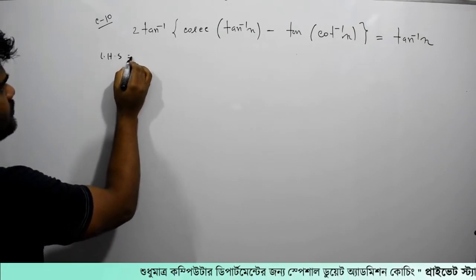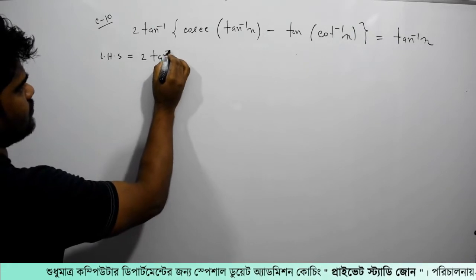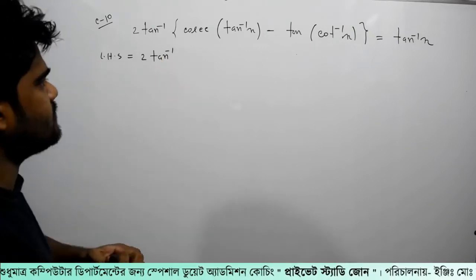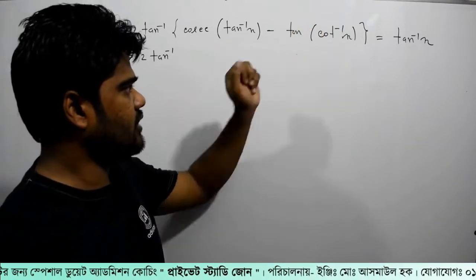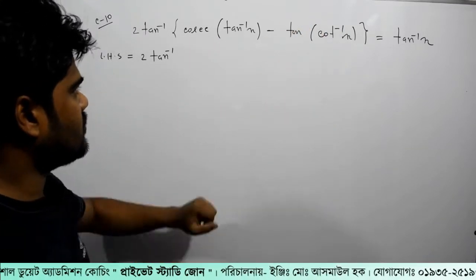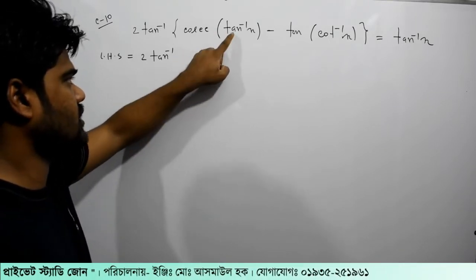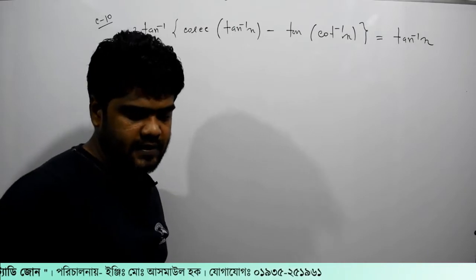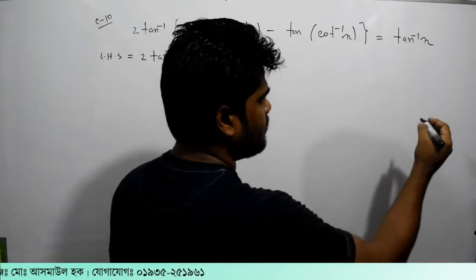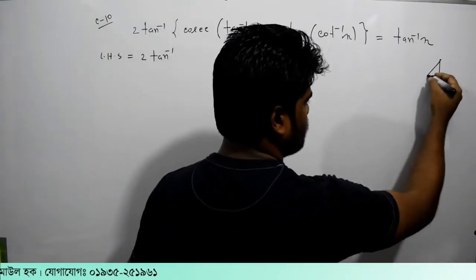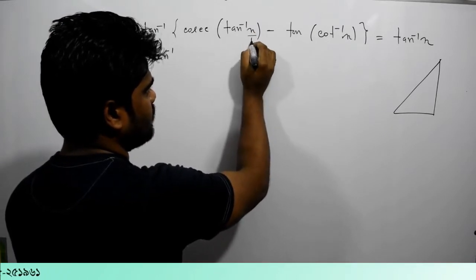L is equal to 2 tan inverse. Cosec tan inverse and cot inverse. We will show you the right hand side. 2 tan inverse x — this is the right hand side.